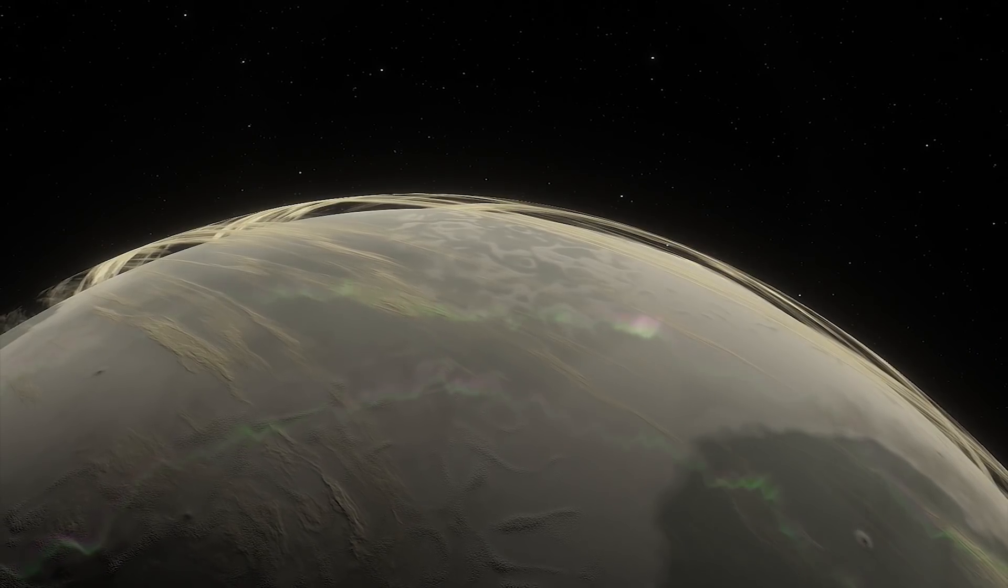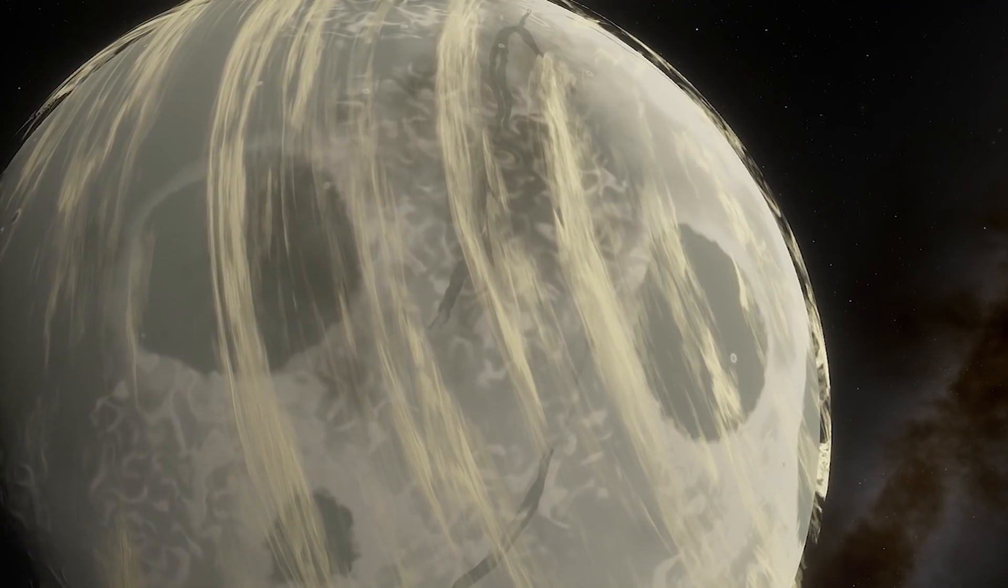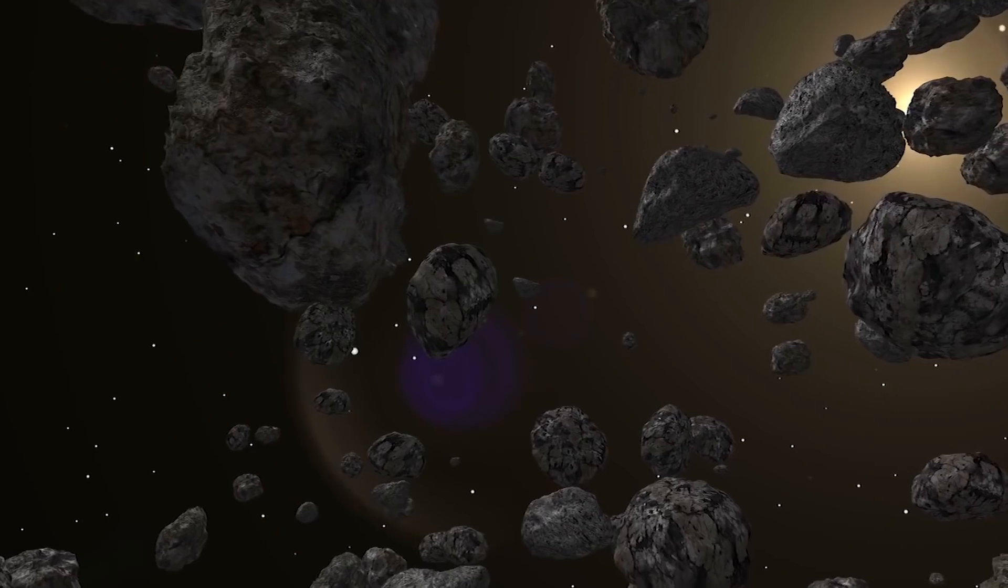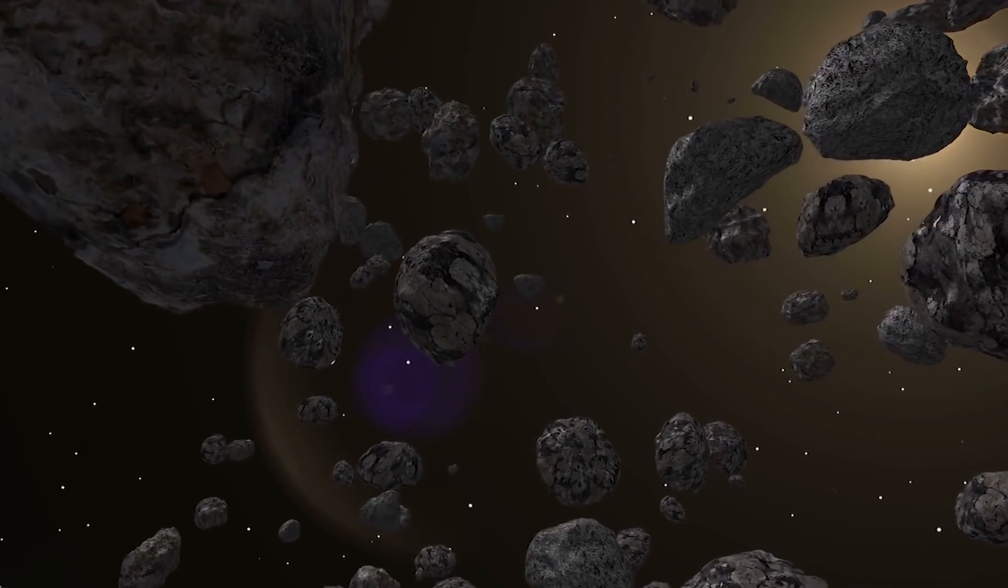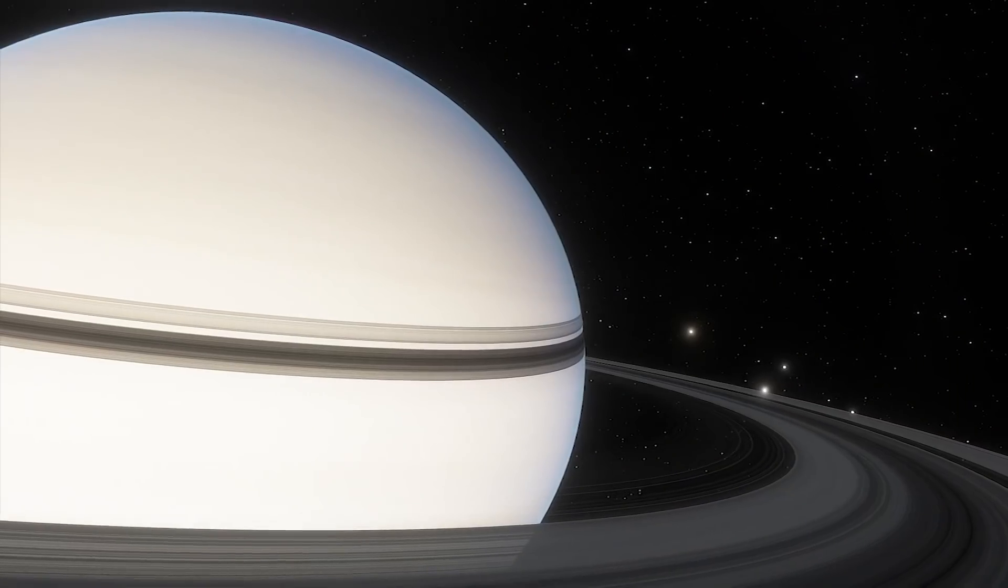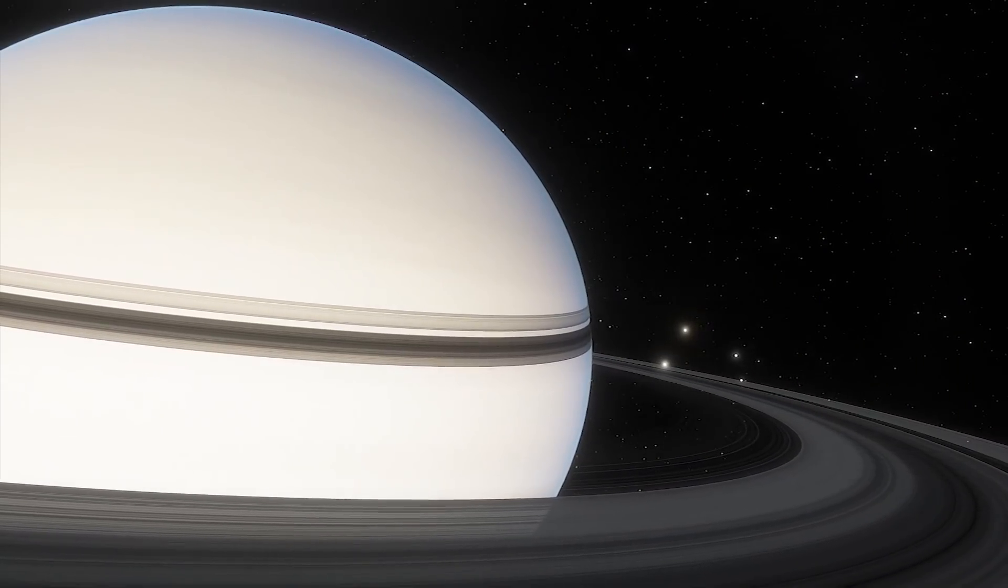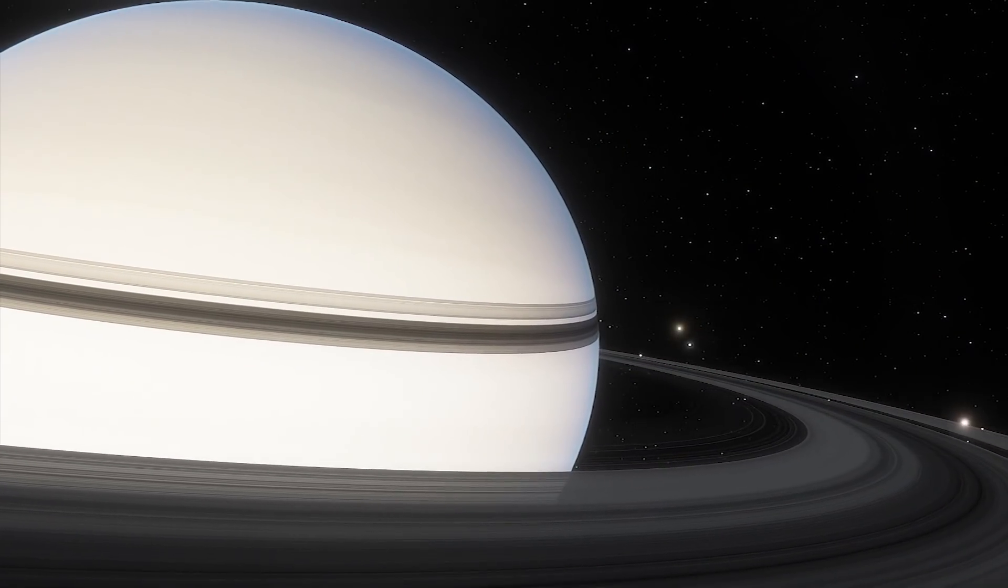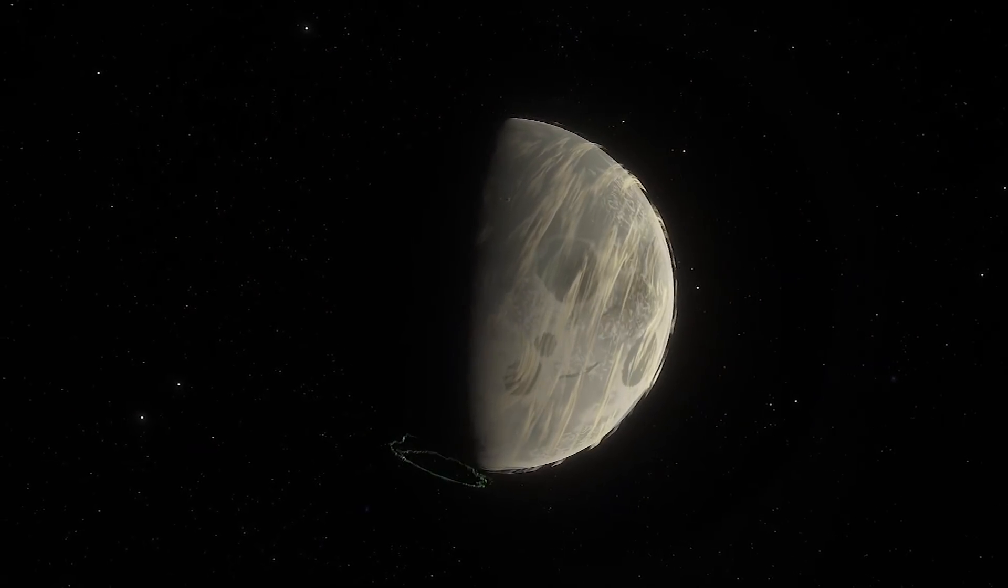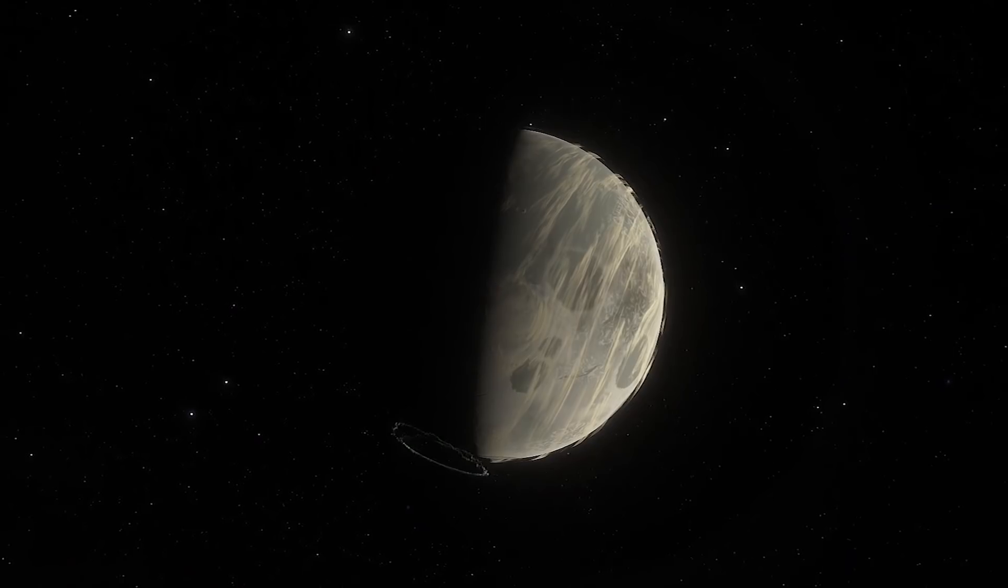Kepler-10c is a gas giant, but it's extremely atypical. Despite their great size, gas giants are actually not very dense because they're made up of vast atmospheres of hydrogen and helium around a small rocky core. The planet Saturn, for example, is so light that it would float in water if you could find a large enough bathtub. Kepler-10c, on the other hand, is solid, which is unheard of for a planet that size.